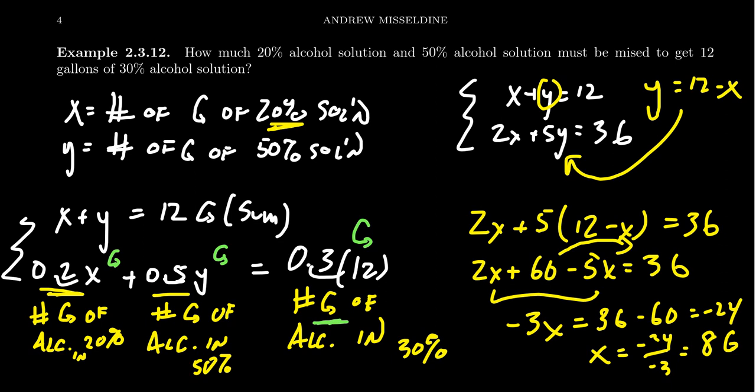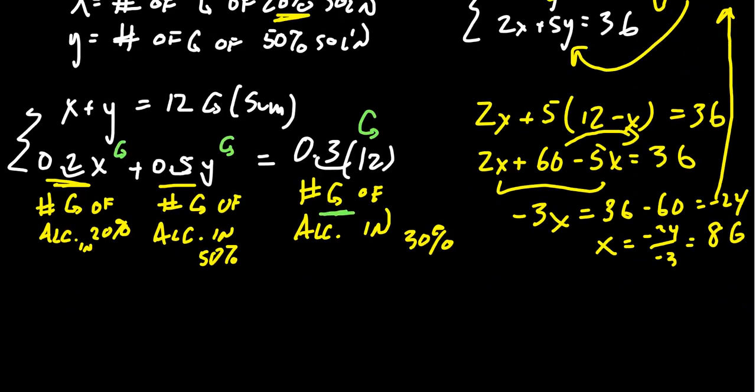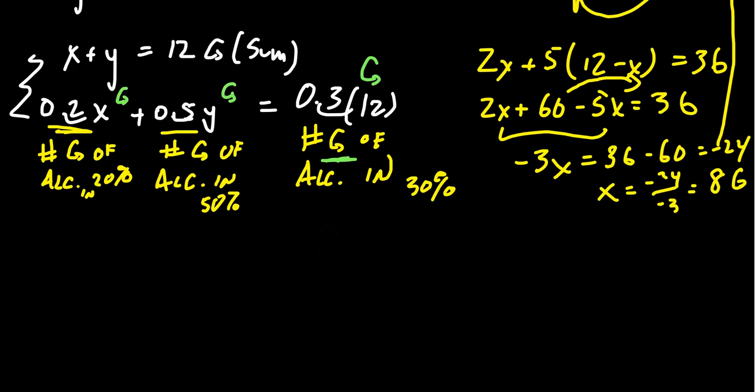Now since we solved this by substitution, just take this 8 gallons and go back in. We get 12 minus 8 which is 4 gallons, so y equals 4 gallons of the 50% solution. That gives us the answer we were looking for.